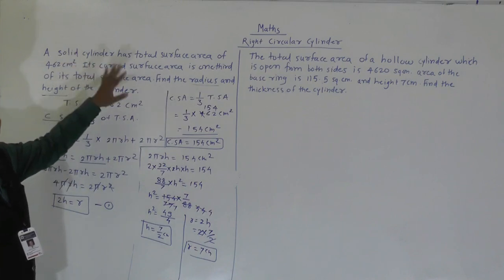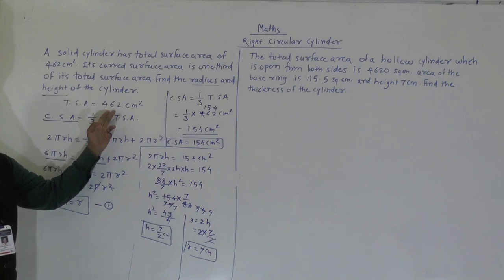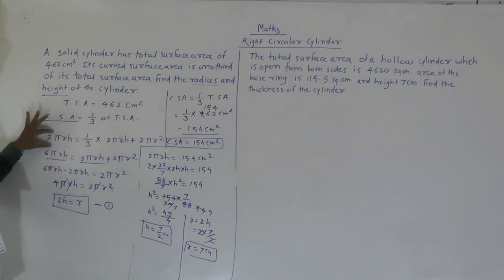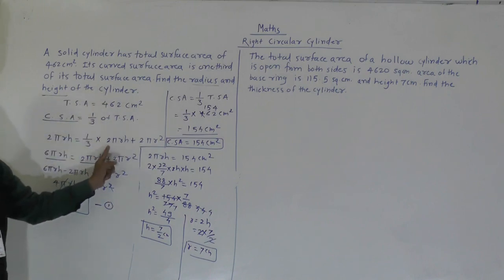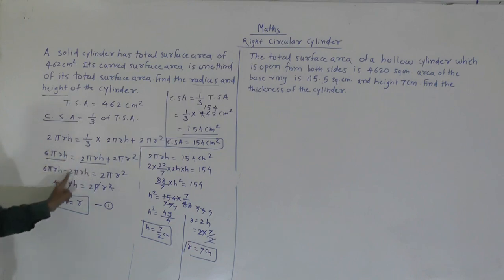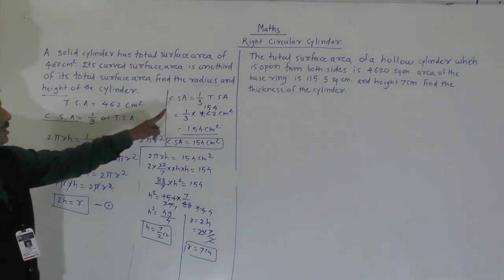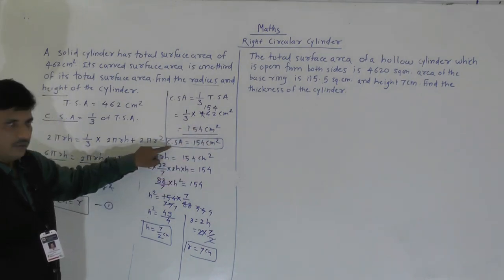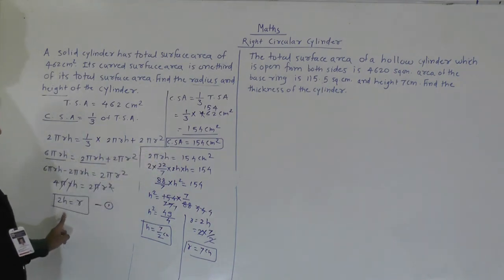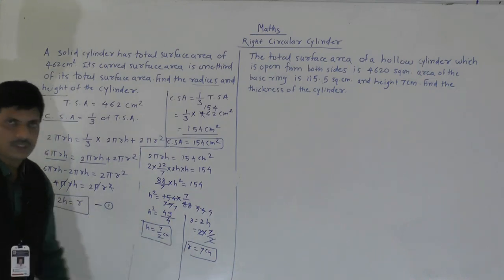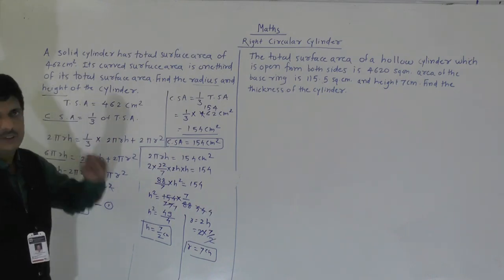Once again let us look at the solution. Total surface area was equal to 462 cm², and the relation given was curved surface area equals one-third of total surface area. According to that, taking curved surface area formula and total surface area as 2πRH plus area of both circles, we derived 4πRH equals 2πR², and canceling π and R gives 2H equals R. Then CSA equals one-third of 462 gives 154 cm². Substituting R with 2H into the CSA formula and solving, we got H equals 7/2 cm, and radius equals 7 cm.